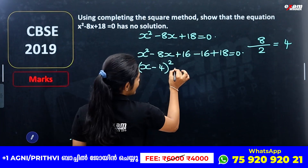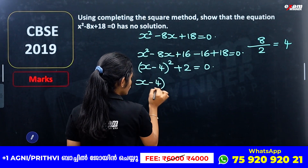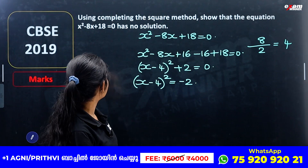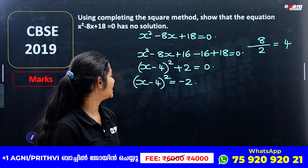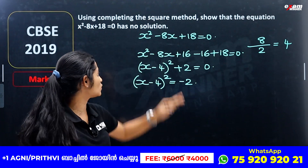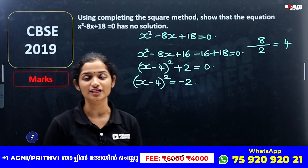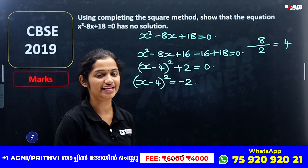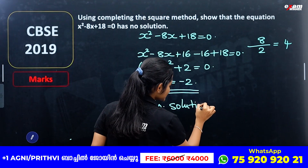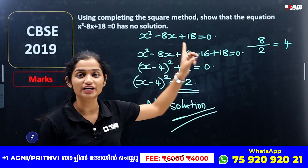So (x - 4)² - 16 + 18 = 0, which gives (x - 4)² + 2 = 0, meaning (x - 4)² = -2. Since we get a negative value on the right-hand side, the equation has no real solution. Therefore, x² - 8x + 18 = 0 has no solution.